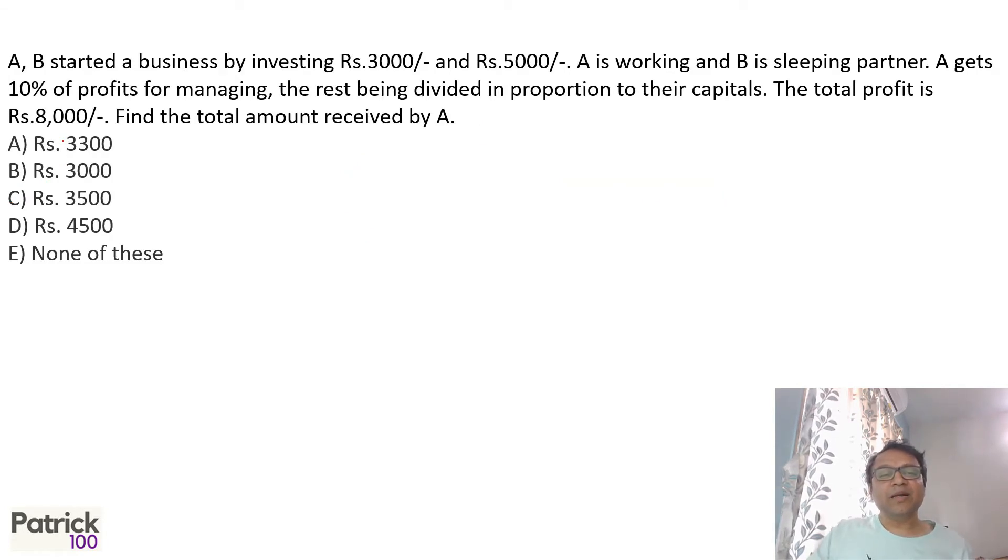Say A and B started a business investing 3000 and 5000. A gets 10 percent of total profit of 8000. Okay, A gets 800 for working, which A gets. So what is left? 7200. Now 7200 has to be divided between A and B in a ratio of 3 to 5.